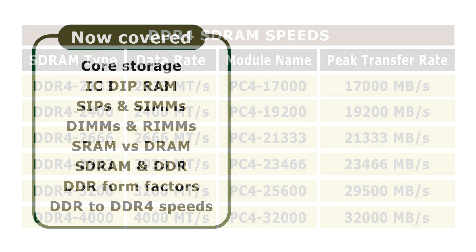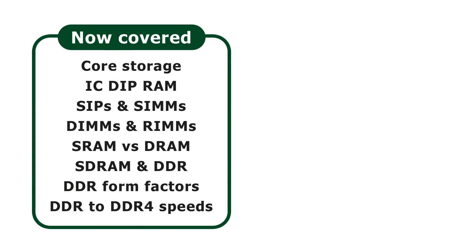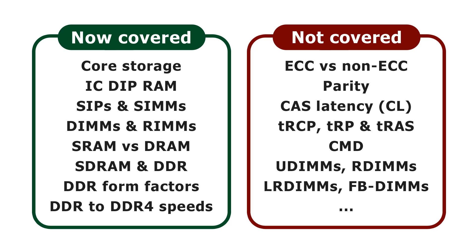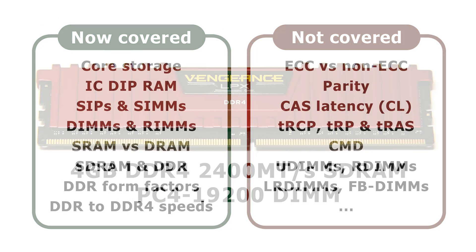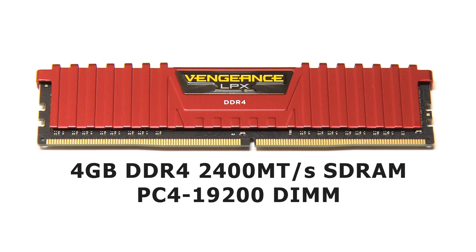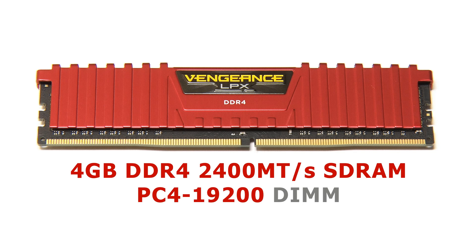I'm now very aware that I've presented rather a lot of information, and I could go on to detail even more RAM terminology. However, I think we've now had enough to make sense of a standard RAM module specification. If we return to the component we had previously, it's hopefully now clear that its specification refers to a four gigabyte module based on fourth generation, double data rate, synchronous, dynamic RAM. We can also see that the module operates with a data transfer rate of 2400 megatransfers a second, equating to a peak transfer rate of 19,200 megabytes a second. And finally, we also know that this RAM before us has a dual inline memory module form factor.